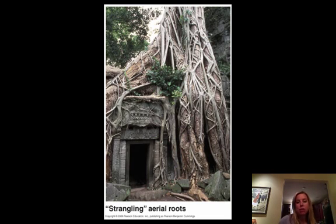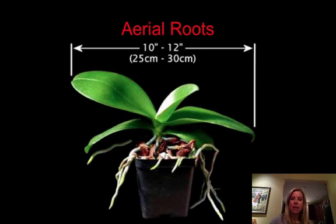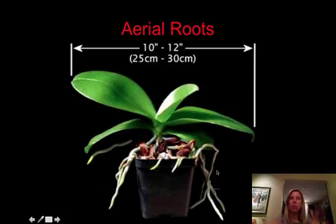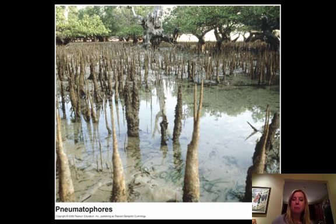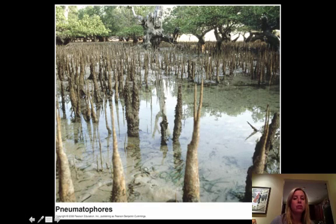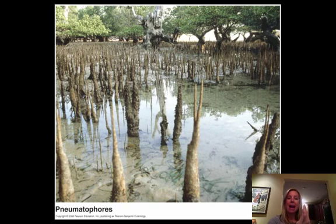Then we've got aerial roots, which are going to grow up into the air like an orchid has. Those are usually in areas where it's going to be pretty humid, and so those can actually extract water from the air. Then you've got pneumatophores — this happens when you have soil that doesn't have a lot of oxygen, so they'll grow into the soil and then grow back out to actually extract oxygen that way.